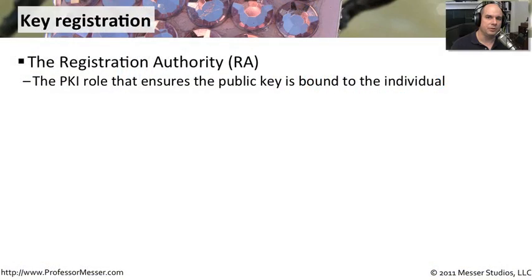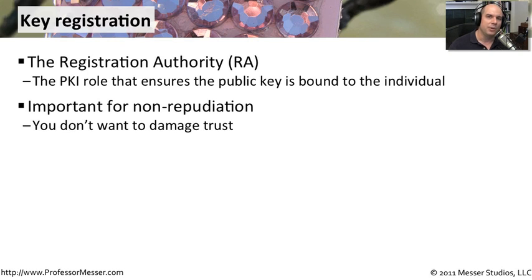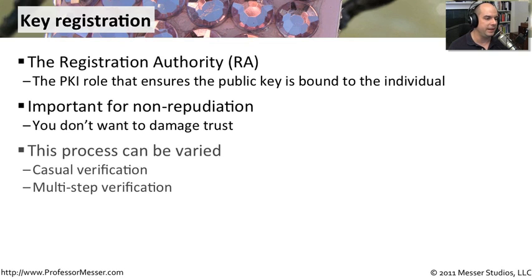The role in your public key infrastructure that ensures you have the right people associated with the right certificates is called the registration authority. It's this registration process that ensures you have exactly the right people lined up with exactly the right certificate. You don't want someone receiving a message from James, signed by James, only to find out later it was somebody who had James' certificate. This registration process is in place to ensure that you don't have that type of fraud or any type of mix-up with those certificates.